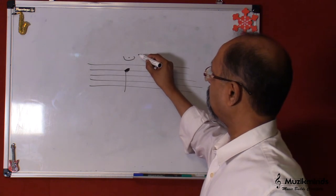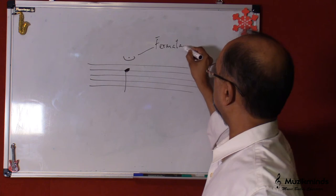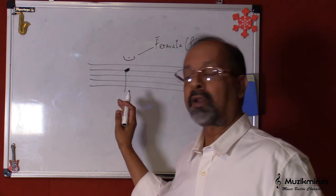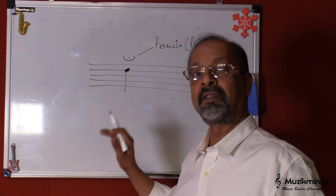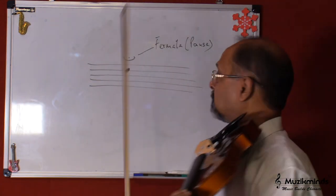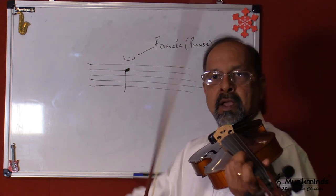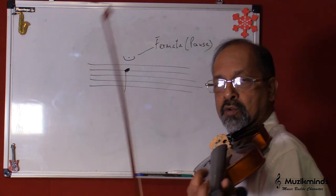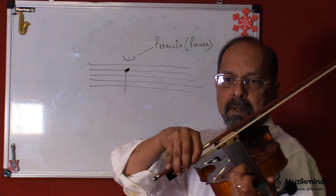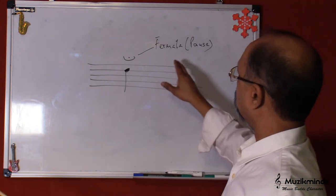Now this symbol is called fermata, which means pause. It means that the note has to be prolonged at the discretion of the player. Now the example would be if this is one crotchet, which is one beat, so it would be like this. But at the discretion of the player, you could prolong this note for as much time as you want. So that's called the fermata.